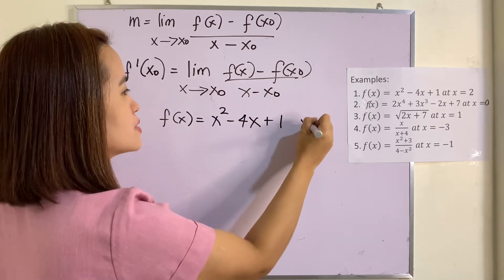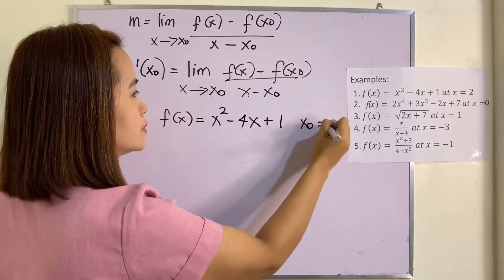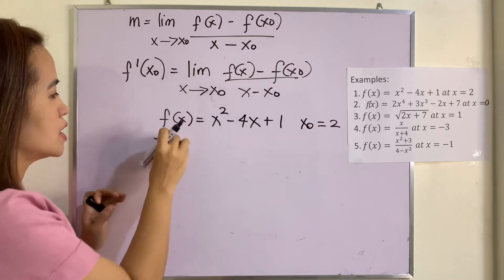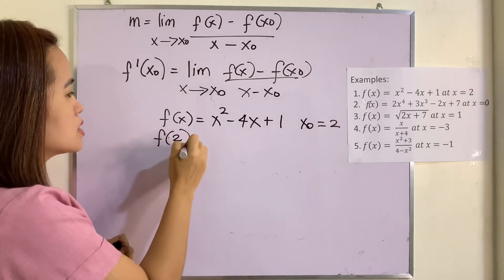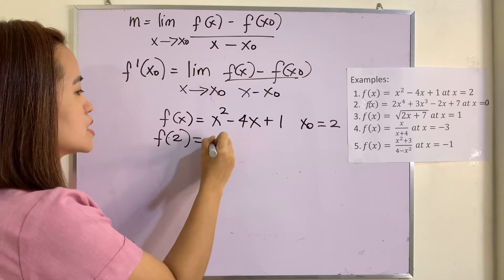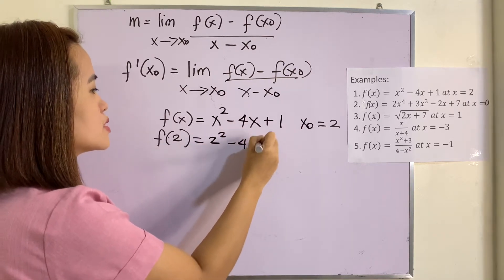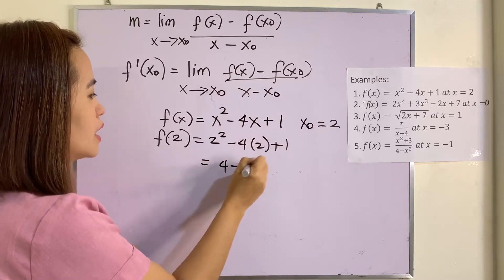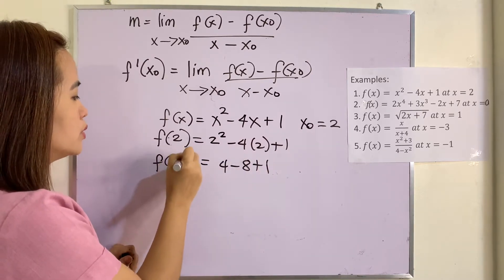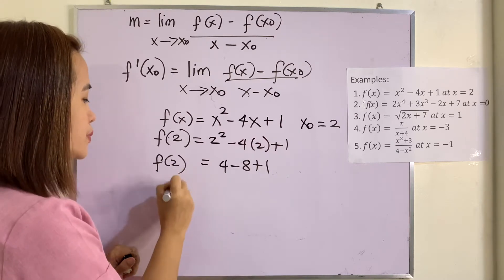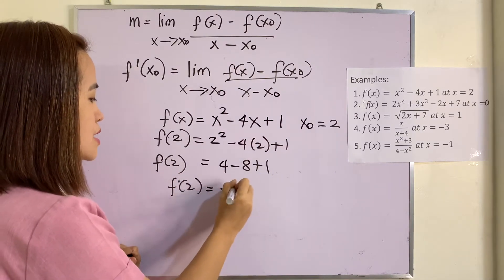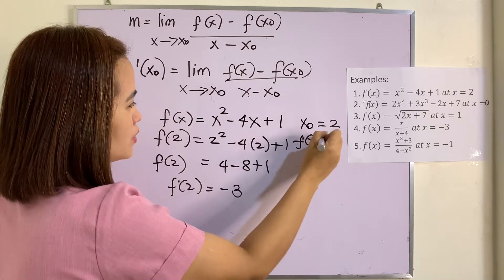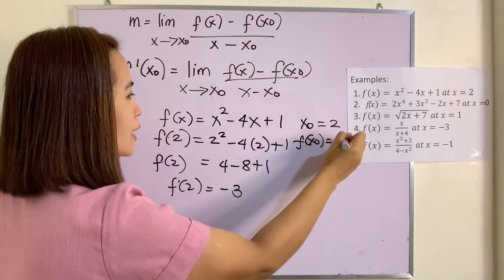Meaning to say our x₀ is equal to 2. Let us find now F(x₀), which is F(2). Substitute all the x's: this is 2 squared minus 4 times 2 plus 1. So we have 4 minus 8 plus 1. Therefore F(2) is equal to negative 3. So our F(x₀) is equal to negative 3.